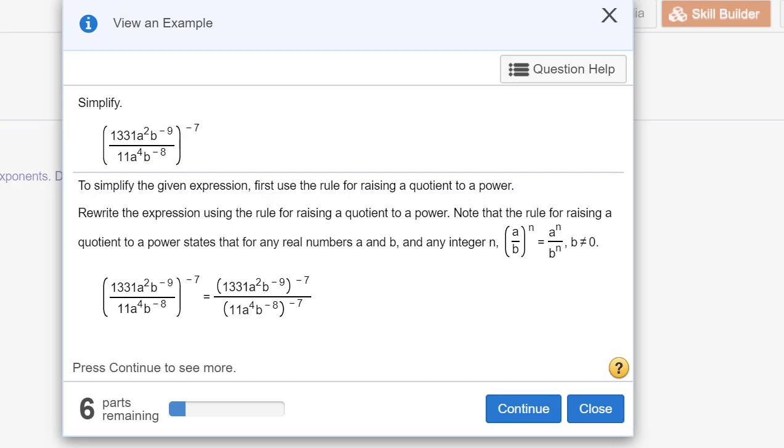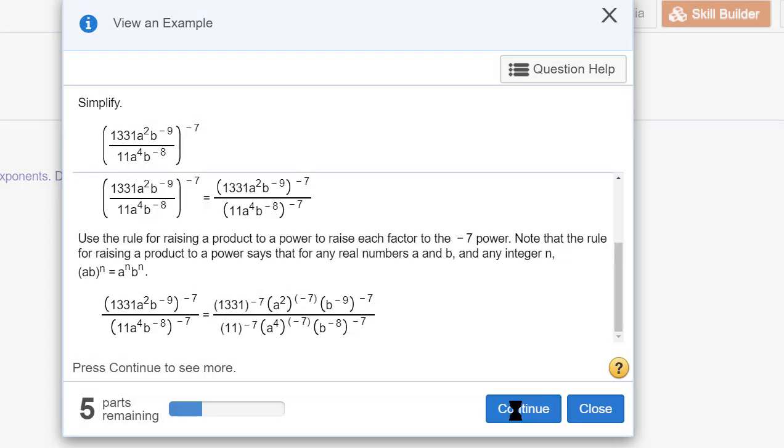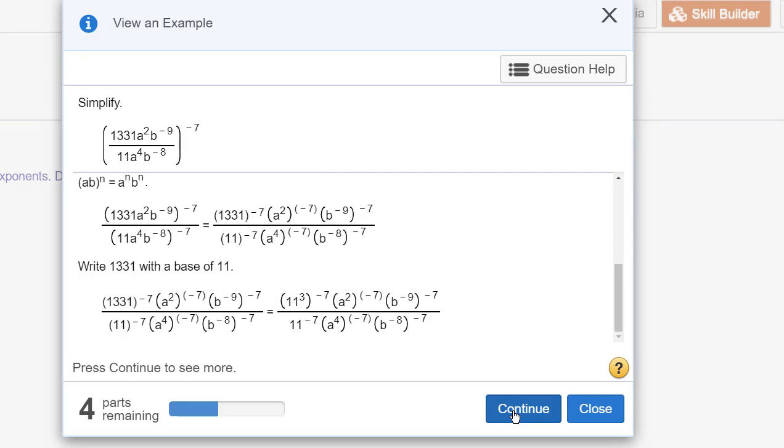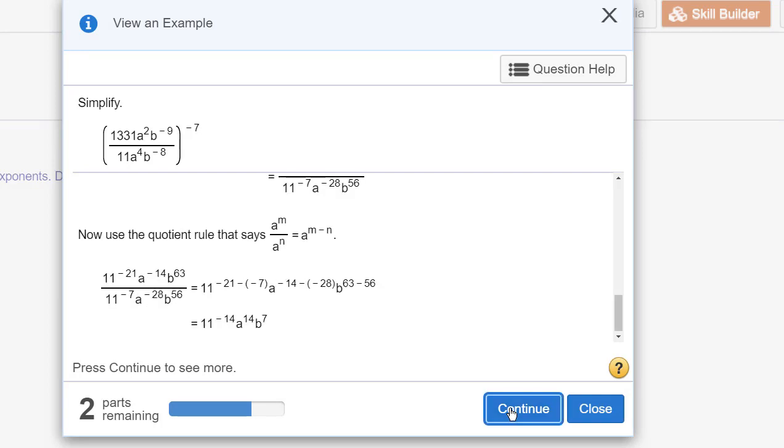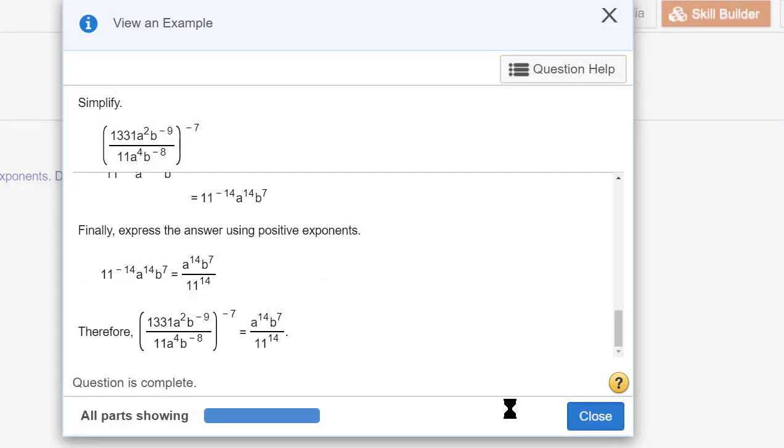View an example is probably better. View an example leaves the original problem over just beyond where the screen is showing here and gives you a problem very similar, and then actually takes you through the steps yourself. Click on continue, click on continue, step by step, like that. And then you close.